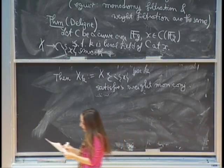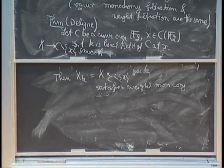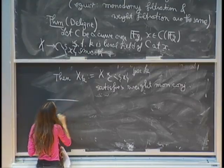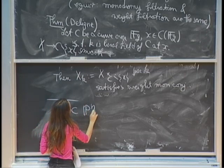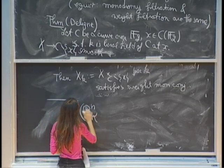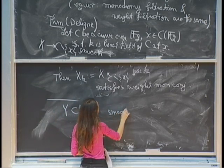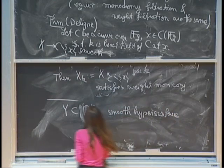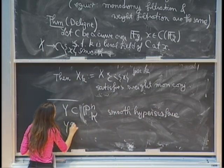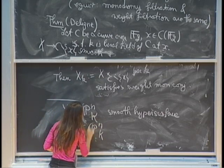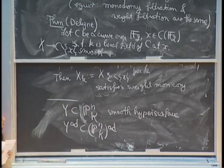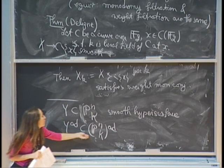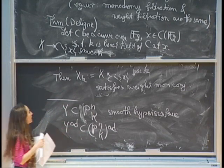After doing this, you have a comparison due to Huber. In fact, you have a comparison with Y-tilde, some open neighborhood of Y in projective space.